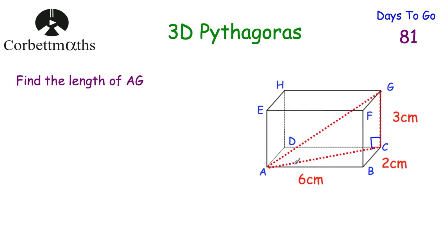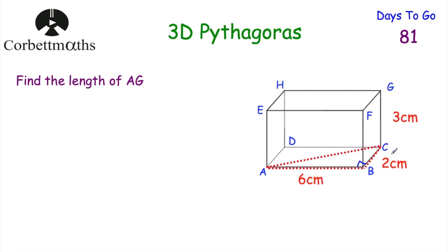What we need to do first is find the length of AC. To find AC we need to consider another triangle. If we look at the base of the cuboid, we've got a rectangle, and if we go across diagonally we get a right angle triangle — triangle ABC — with two known shorter sides BC and AB. We'll use Pythagoras once to find the length of AC and then use it again on triangle ACG.